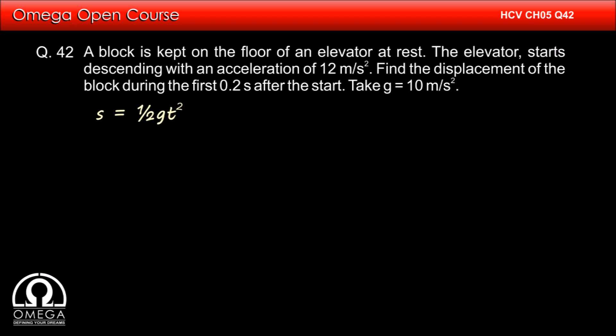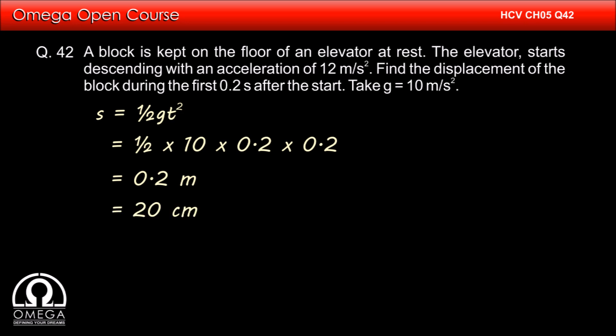Hence its displacement after 0.2 seconds is given by half g t squared, i.e., half times 10 times 0.2 times 0.2, which equals 0.2 meters or 20 centimeters. This is our answer.